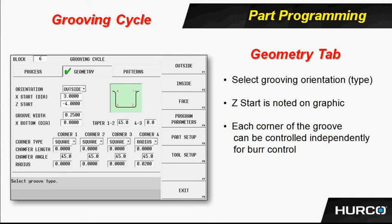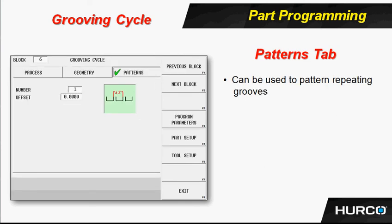Here's an example of the patterns screen. Maybe this particular groove you just programmed occurs more than just once. So it wants to know how many times, and from the first location, is the offset positive or negative? If you did one groove towards the front of the part and wanted four of those, you put four including the original, and then it repeats every 200 thousandths positive or 200 thousandths negative.